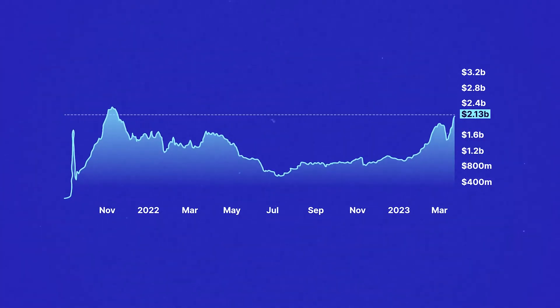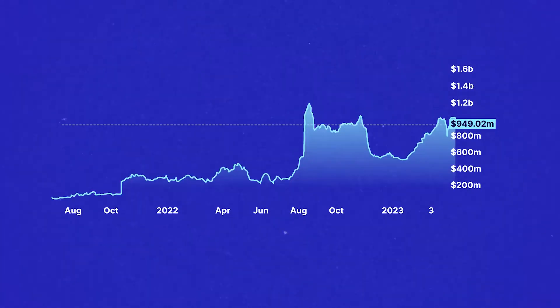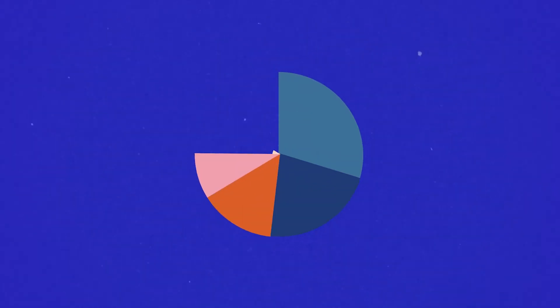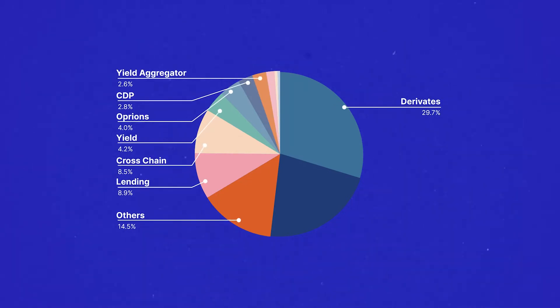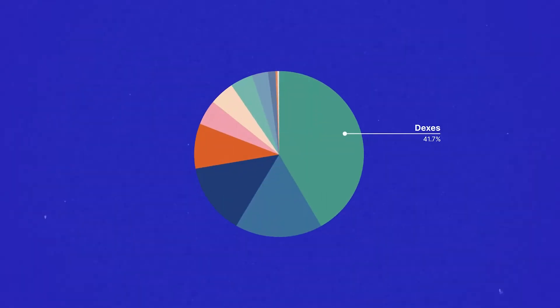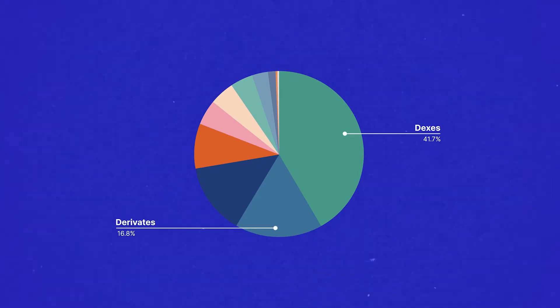In terms of TVL, Arbitrum is clearly ahead. According to DeFi Llama, the chain boasts more than double the total value locked of Optimism. Block Crunch found that Arbitrum's TVL is less dependent on one sector — almost 30% comes from derivatives and 22% from DEXs. Meanwhile, DEXs account for almost 42% of the TVL on Optimism, with only about 7% coming from derivatives.